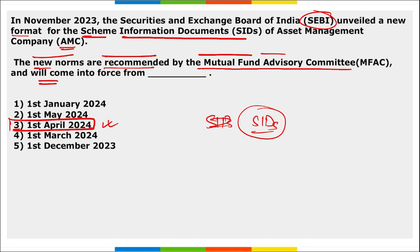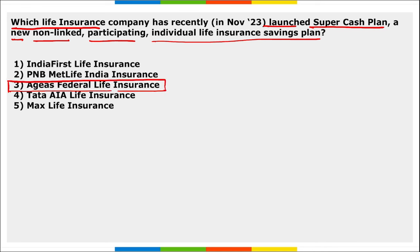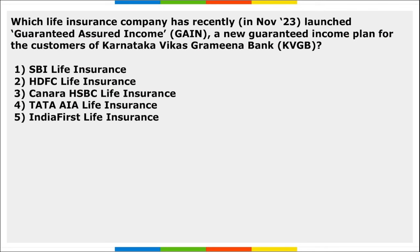Next: which life insurance company recently launched the Super Cash Plan — a new non-linked, participating individual life insurance saving plan? It is Ageas Federal Life Insurance. They have launched a new participating individual life insurance saving plan called the Ageas Federal Life Insurance Super Cash Plan.